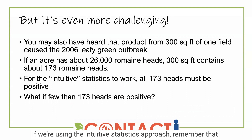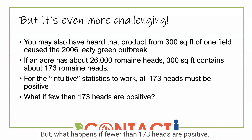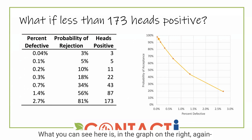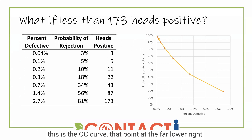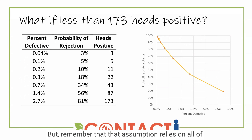If we're using the intuitive statistics approach, remember that all 173 heads have to be positive for that approach to work. But what happens if fewer than 173 heads are positive? Here in the graph on the right — again, this is the OC curve — that point at the far lower right corner of the graph represents a 2.7 percent defective rate, which has a probability of rejection of 81%. So it's not 100%, but it's still pretty good at 81%.